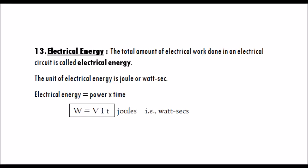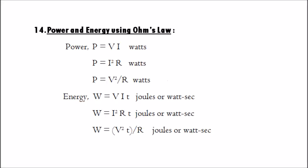Electrical energy: the total amount of electrical work done in an electrical circuit is called electrical energy. The unit of electrical energy is joule or watt second. Electrical energy equals power into time, therefore W equals V into I into T in joules or watt seconds. The following expressions are also used to calculate the power consumed using Ohm's law in the various parts of an electric circuit.